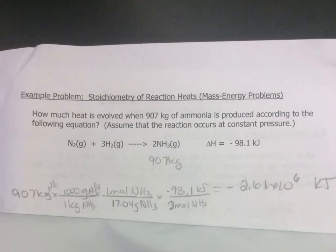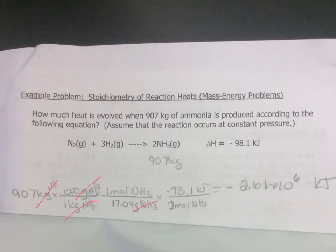We take the 907 kilograms of ammonia and change it to grams first — kilograms cancel out. Then we use the molar mass of ammonia to change it to moles of ammonia. Lastly, we use the fact that negative 98.1 kilojoules of heat are evolved for every two moles of ammonia to cancel out our moles of ammonia. Our answer is negative 2.61 times 10 to the 6 kilojoules of heat.